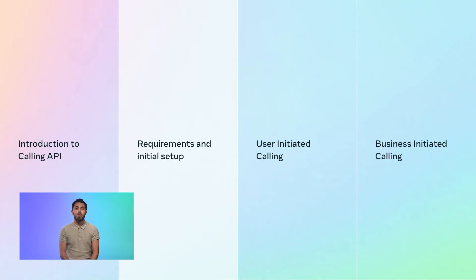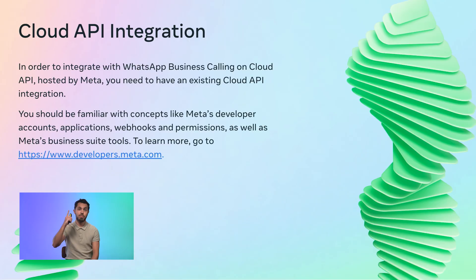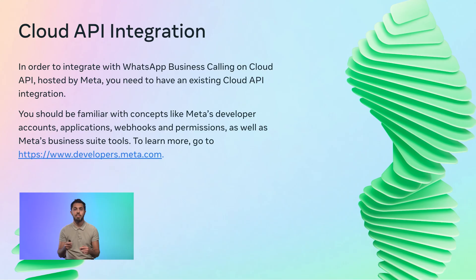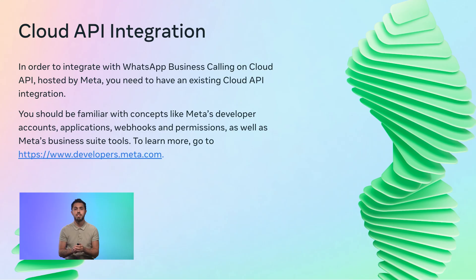Let's talk about the requirements and how to do the initial Calling API setup. First, you need to have an existing integration with the Cloud API hosted by Meta. You should be familiar with concepts like developer accounts, applications, webhooks, and permissions. If you're not familiar with these concepts, pause this video and check out the free resources on the Meta for Developers website.